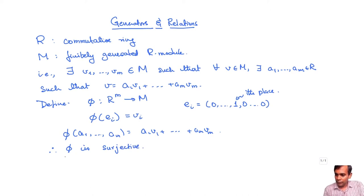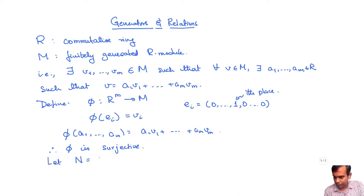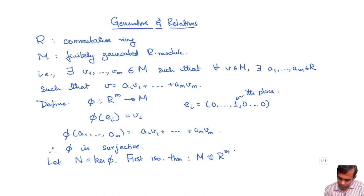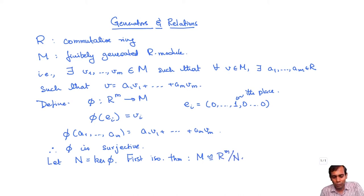Now, let N be the kernel of phi. By the first isomorphism theorem, we have M is isomorphic to R^m mod N. So what we are seeing is that every finitely generated R-module is isomorphic to a quotient of a free module of the form R^m.